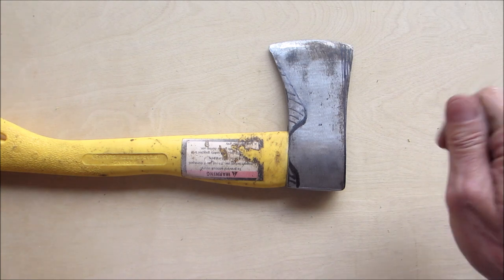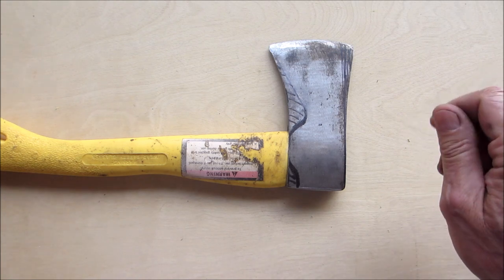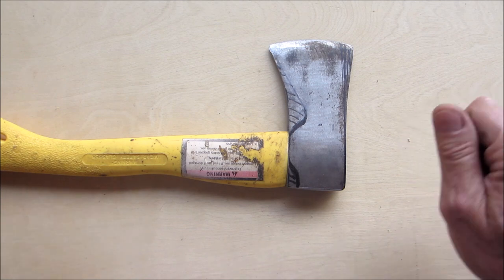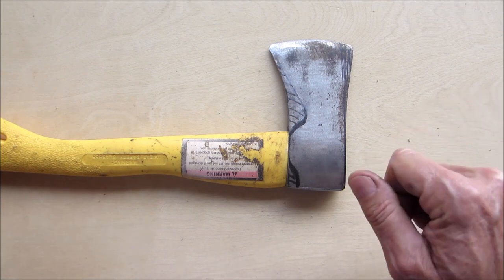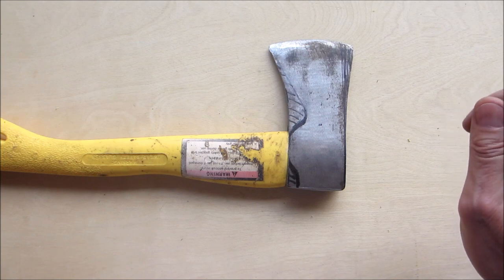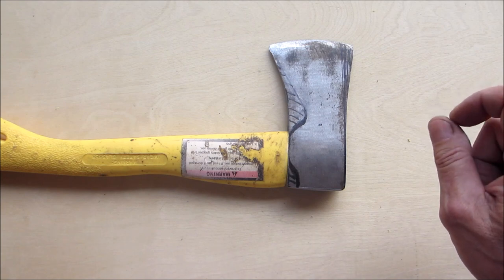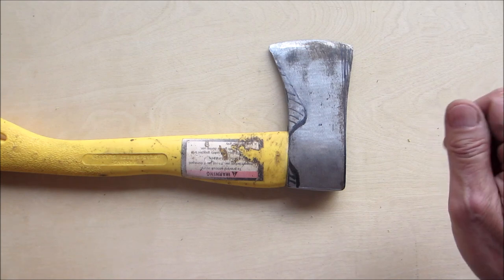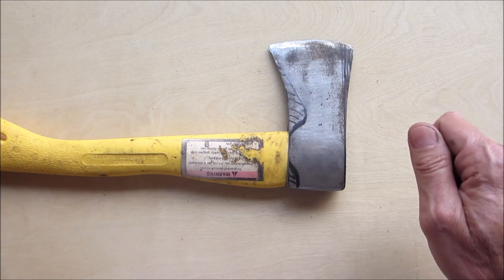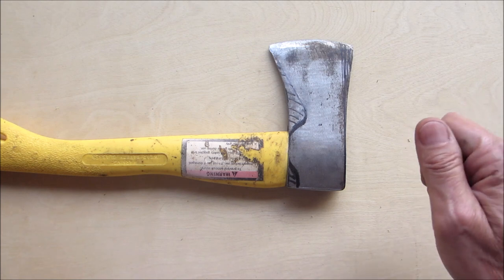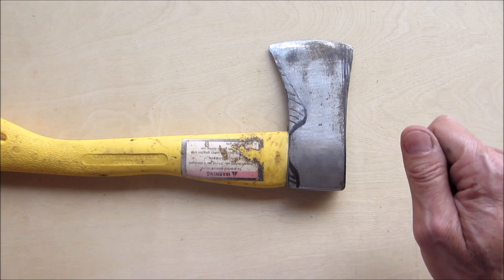I do have some other ones. I have my Estwing which I love with the leather handle. I have a Self Reliance Outfitters little forged colonial Virginia axe which is a nice axe, but that one's just a little too small handle-wise. So I decided I wanted to get a Gransfors Bruks.